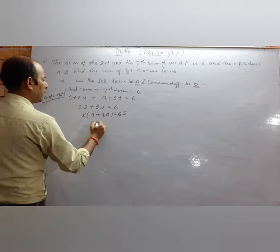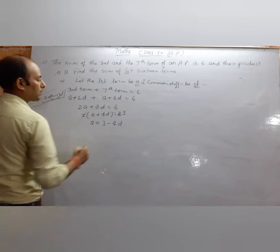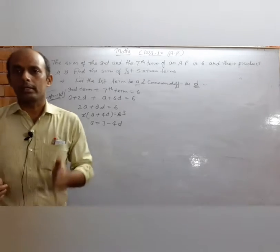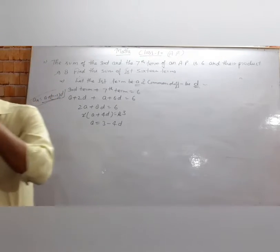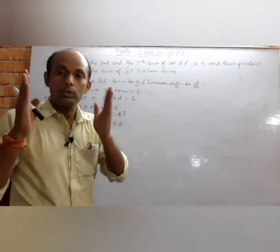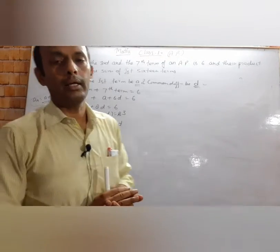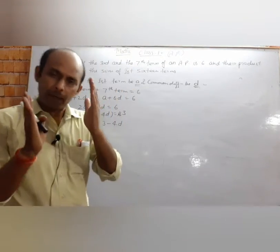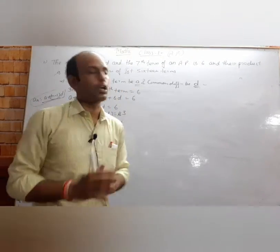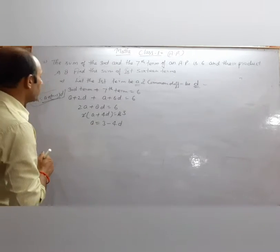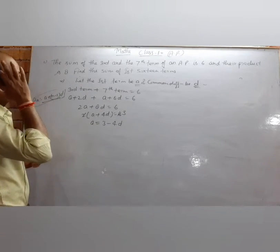Therefore a is equal to 3 minus 4d. This means you need to understand everything clearly and read the question carefully before solving it.